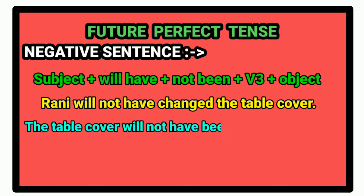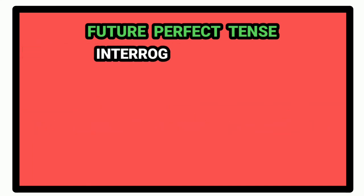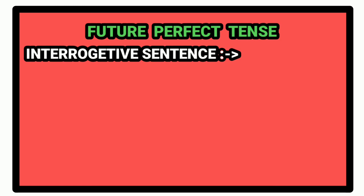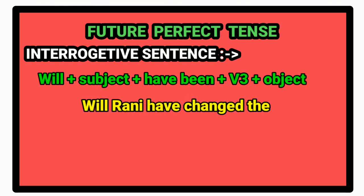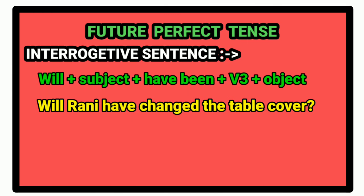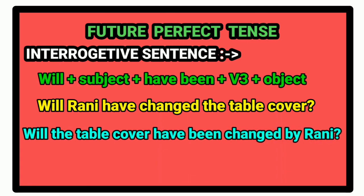For interrogative sentence in future perfect tense, the rule is as follows. First of all, we write will, and then subject. After that, we write have, been. Then the past participle form of the verb. After that, the object of the sentence. For example, will Rani have changed the table cover? The passive voice will be: will the table cover have been changed by Rani?